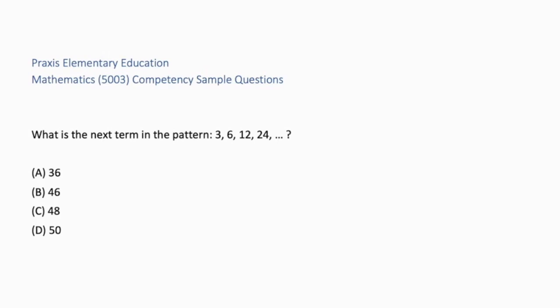What is the next term in the pattern? 3, 6, 12, 24. A, 36. B, 46. C, 48. D, 50. If we look at the pattern, we can see that it doubles each time. 3 times 2 is 6. 6 times 2 is 12. 12 times 2 is 24. A, 36 is not doubling, it is adding instead of multiplying. B and D are just random arithmetic progressions. The correct answer is C, 48. If we take the last number 24 and multiply it by 2, we get 48.